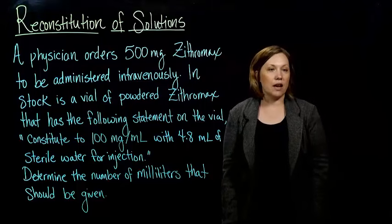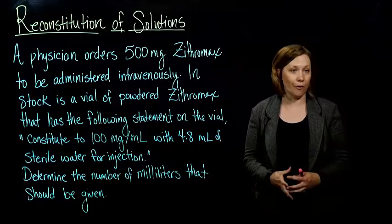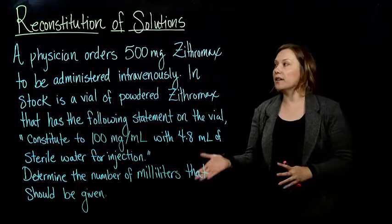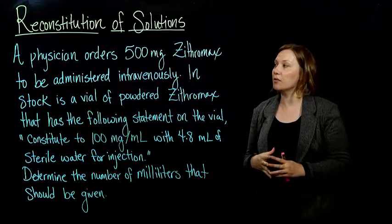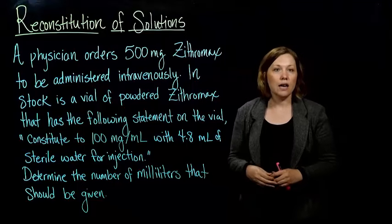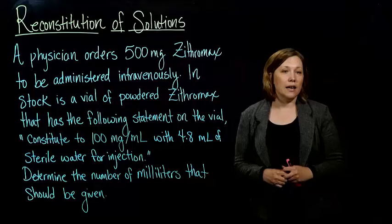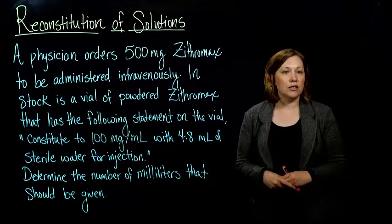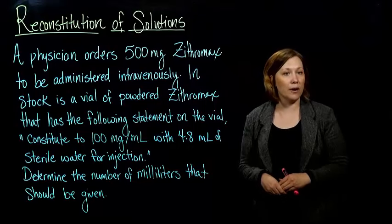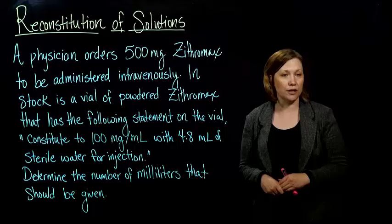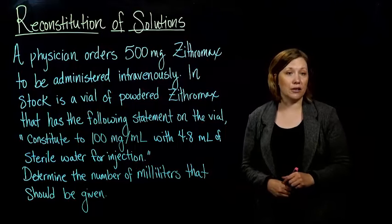Sometimes medications come in a powdered form and have to be reconstituted into a liquid form to be given. A physician orders 500 milligrams of Zithromax to be administered intravenously. In stock is a vial of powdered Zithromax that has the following statement on the vial: reconstitute to 100 milligrams per milliliter with 4.8 milliliters of sterile water for injection. We need to determine the number of milliliters that should be given.